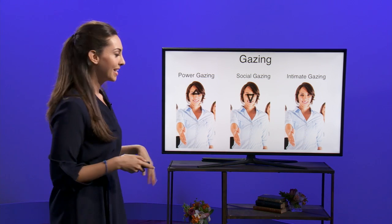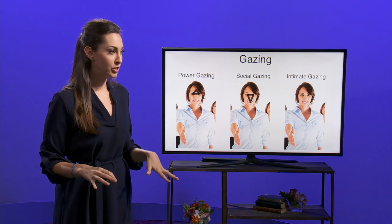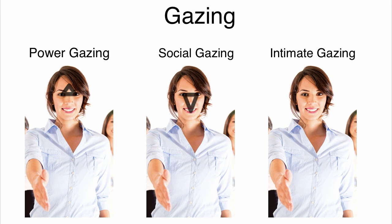The second type of gazing is social gazing. When we're in more casual situations — maybe networking events, definitely out with friends — our eyes make a different pattern. They drop down to our mouth: eye, eye, mouth. That's where we look when we're looking at someone; we make that little triangle. When we're more casual, it's literally like we let our guard down, or our gaze down. We drop down to be more casual.